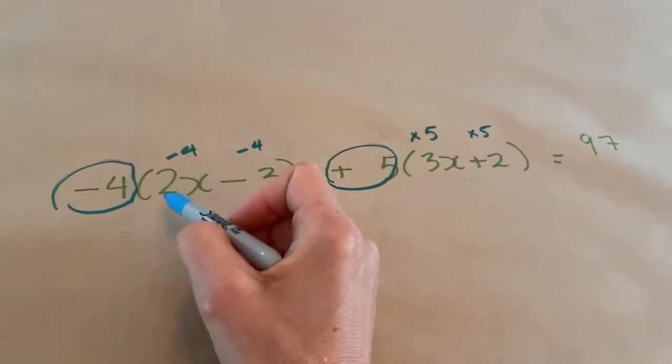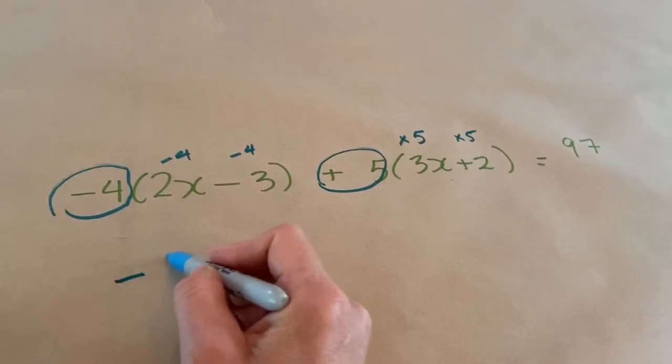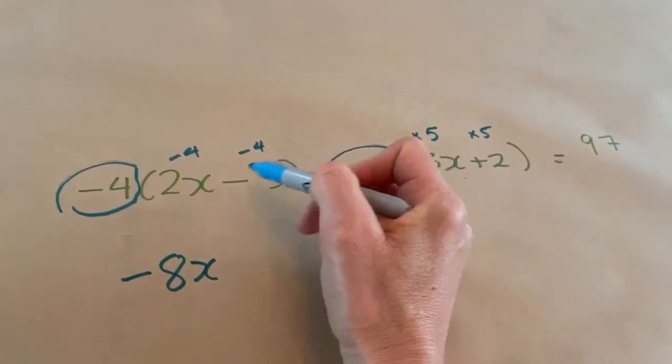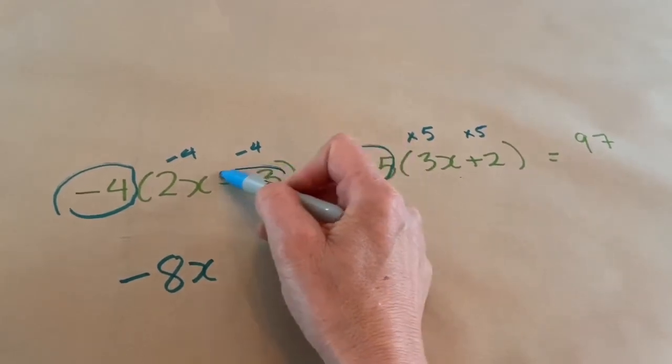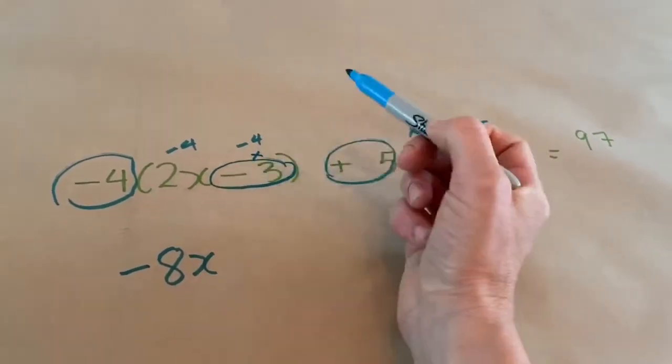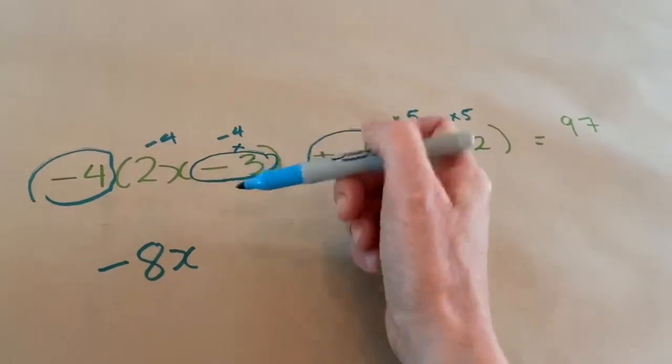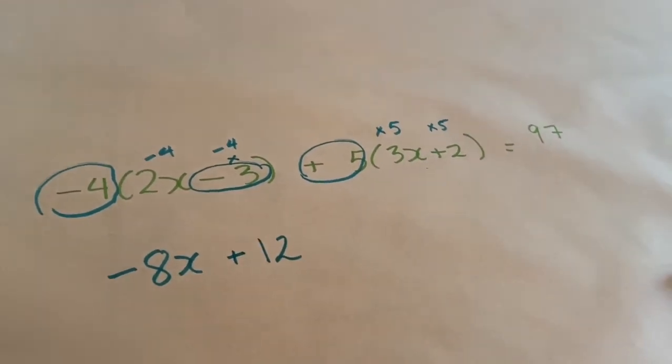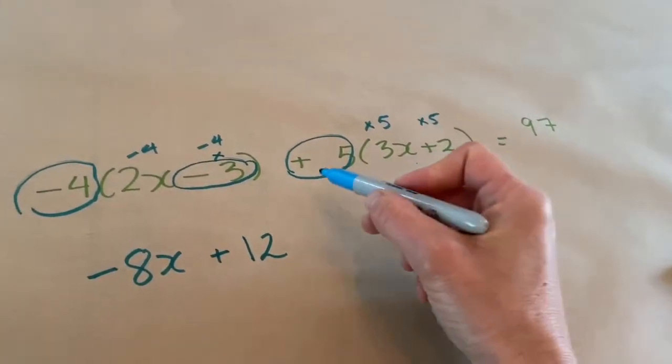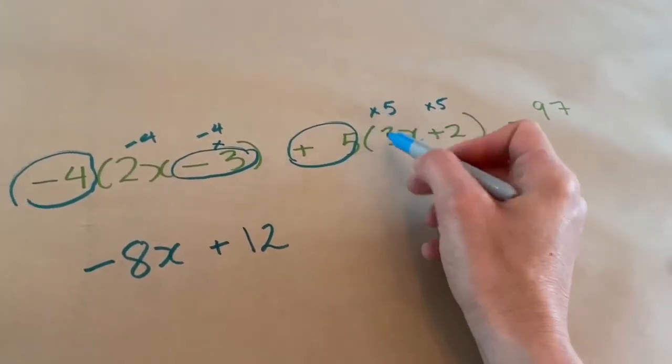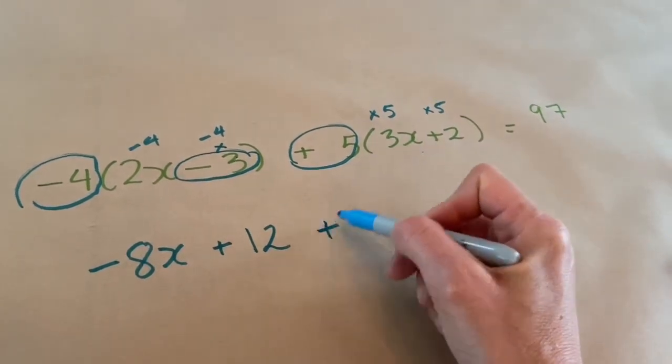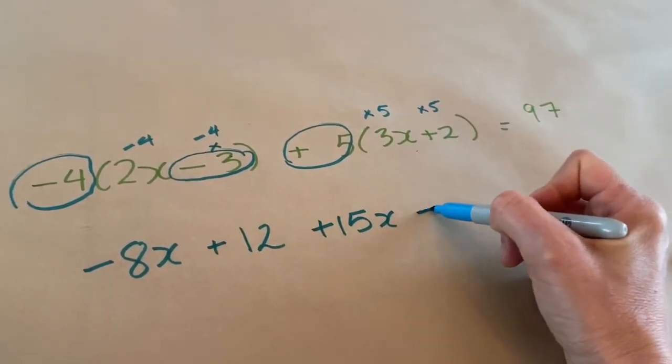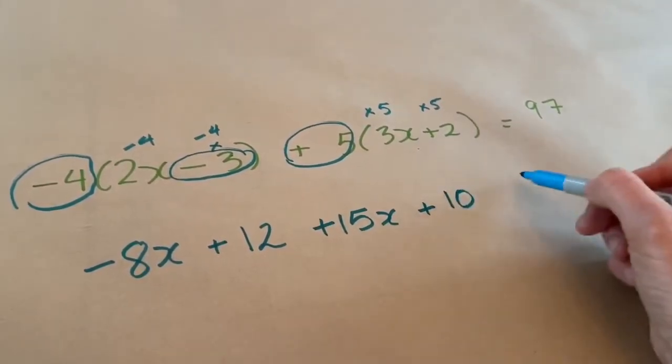I have negative 4 times 2x gives me negative 8x. Now, this negative 4 is not being multiplied by 3, it's negative 4 times negative 3. So if you do that with your calculator, if you multiply two negatives, your calculator would just give you 12. But that means it's plus 12, so don't forget to put the plus 12 down. Then we have 5 times 3x, which would give us 15x, and 5 times 2, which would give me 10 equals 97.